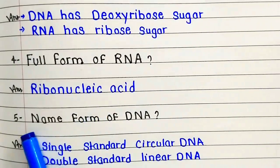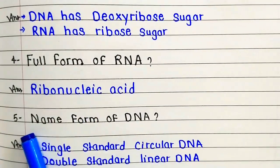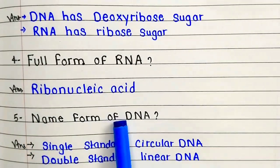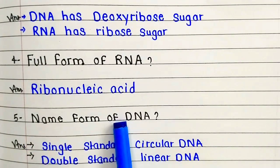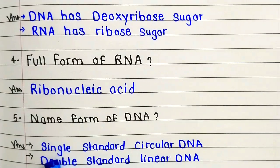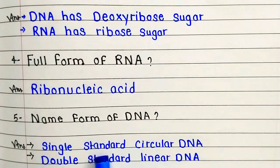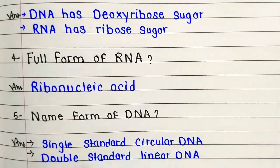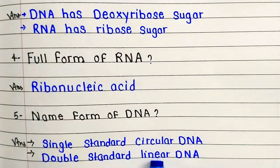Question number 5: Name the forms of DNA. Single stranded circular DNA. Double stranded linear DNA.